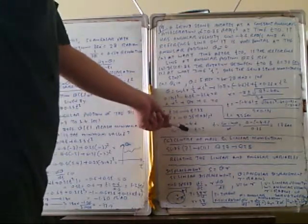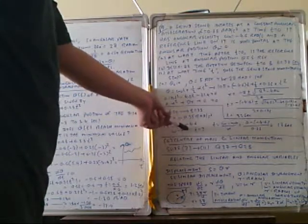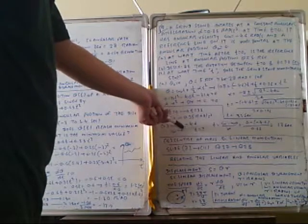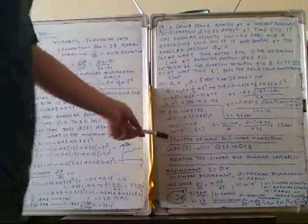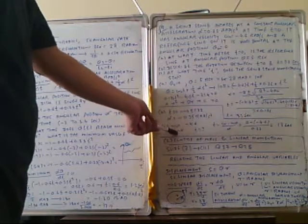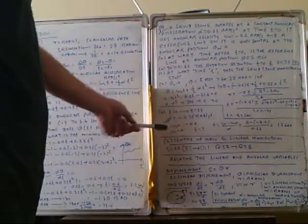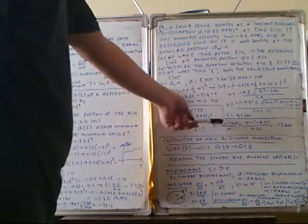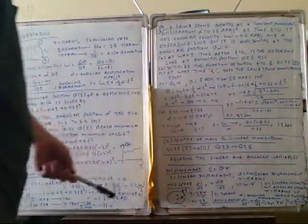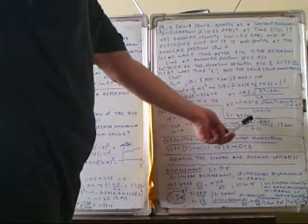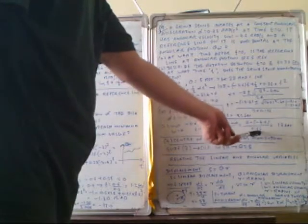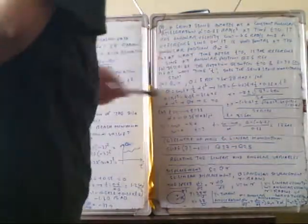For part C, the grindstone momentarily stops when omega equals zero. The initial angular velocity omega zero is minus 4.6 radian per second, and the final angular velocity is zero. Using t equals omega minus omega zero divided by alpha, we substitute: t equals zero minus (minus 4.6) divided by 0.35. This gives the time instant when the grindstone momentarily stops.